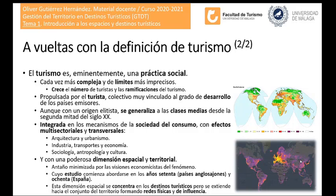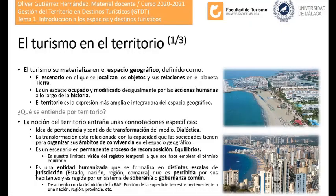Por ejemplo, es muy típico que dentro de Andalucía la influencia del aeropuerto de Málaga produzca que su hinterland, su área de influencia, abarque prácticamente el conjunto de Andalucía, incluso más allá. El turismo se materializa en el espacio geográfico. El espacio geográfico es el escenario en el que se localizan los objetos y sus relaciones sobre la superficie de la Tierra.